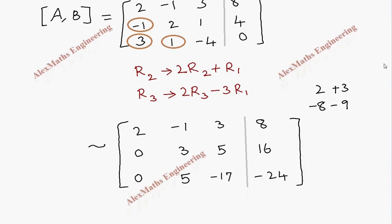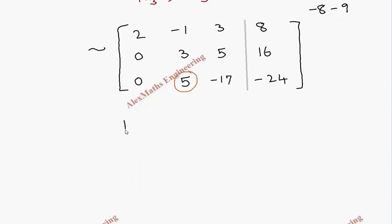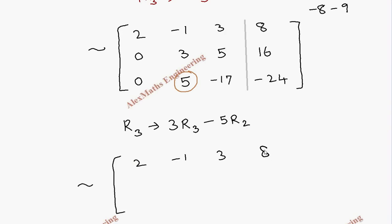Now this next element I have to make zero, and for that I have to do another row 3 operation. I take row 3 and use the value 3. The LCM for these two numbers is 15, so I take 3 times row 3 and subtract 5 times row 2. In the resulting augmented matrix, the first row is written as it is and the second row is written as it is. Now coming to the third row.